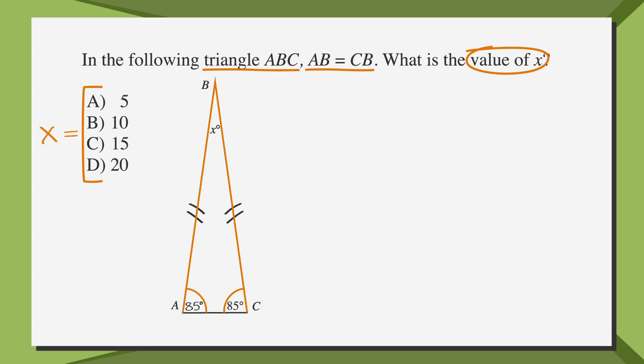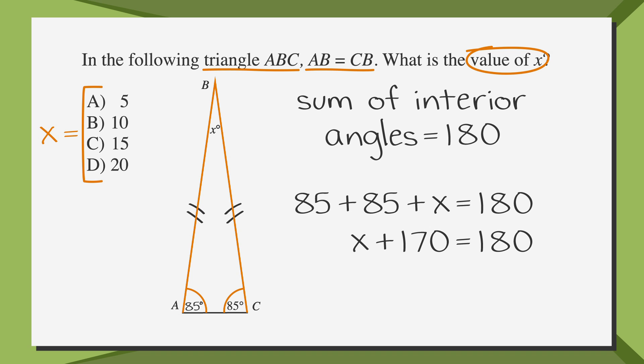Great, we're almost done. Remember that the sum of the angles of a triangle equals 180. Based on that, we can say that 85 plus 85 plus x is 180, or that x plus 170 is 180. Solving for x, we get that x is equal to 10 degrees. So answer choice B is correct.